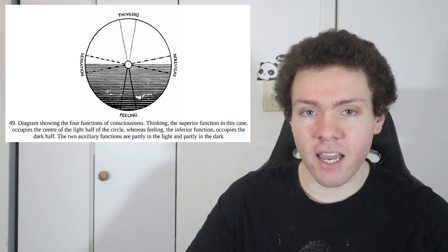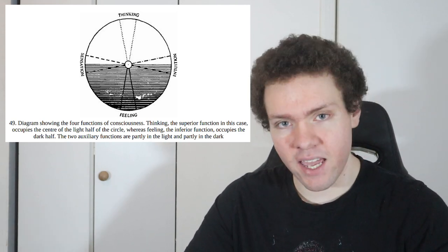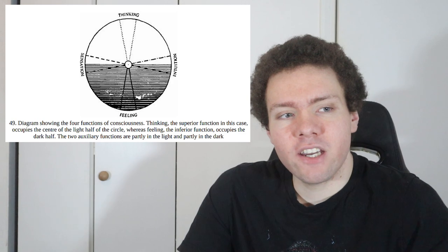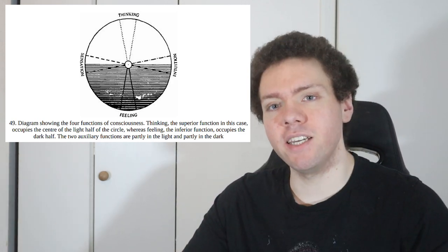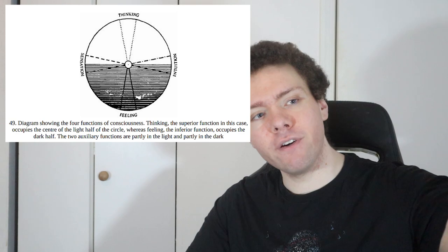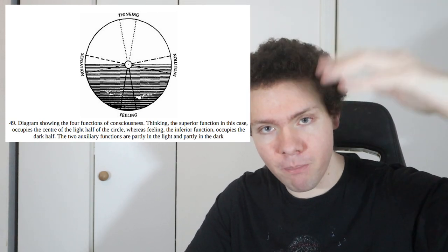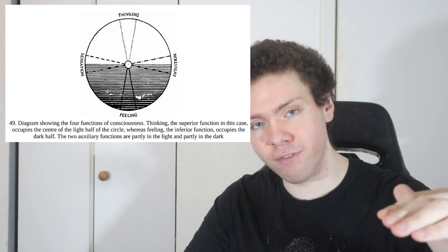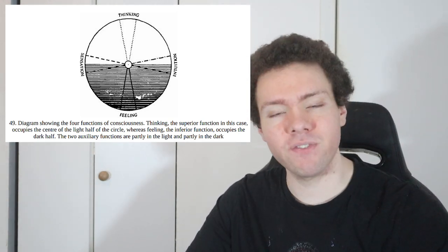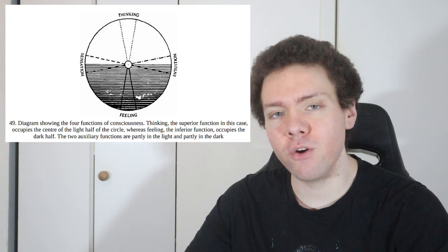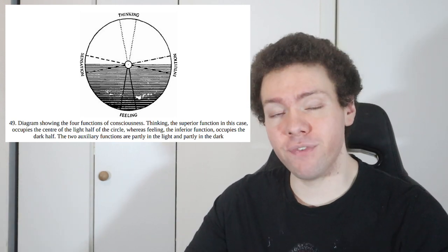We look at an INTJ and we have NI, TE, then FI, then SE. And I think the way that Carl Jung was actually presenting it was that we have a dominant function, followed by two auxiliary functions, which is then followed by a repressed function, in terms of preference for how we interact with and how we value these functions.